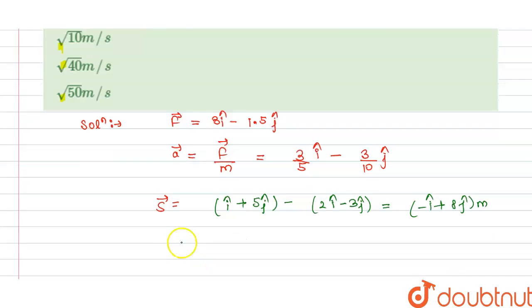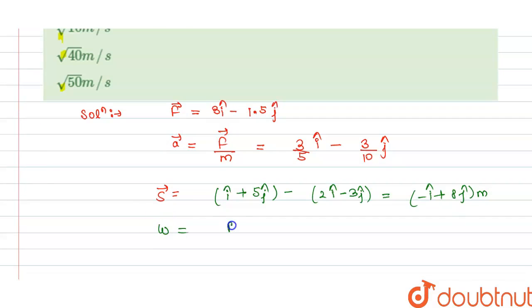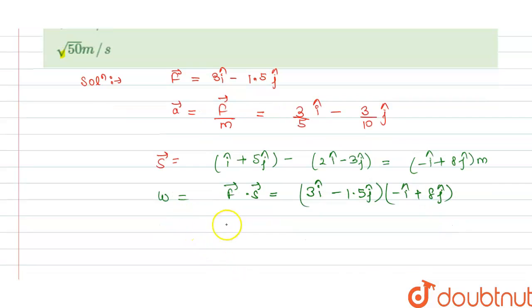And we have the work done is equal to force dot product of force and displacement. So this will become 3i cap minus 1.5 j cap dot product with minus i cap plus 8 j cap.